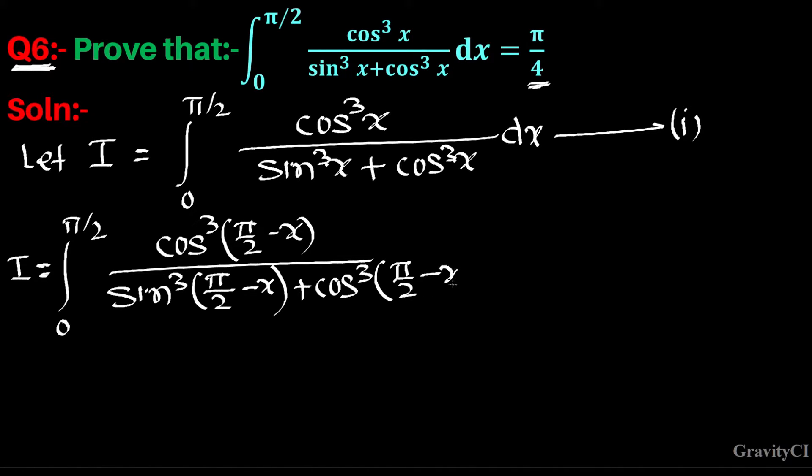So we have used the property: integral 0 to a of f(x)dx equals integral 0 to a of f(a - x)dx.